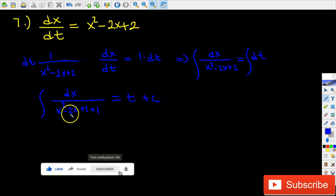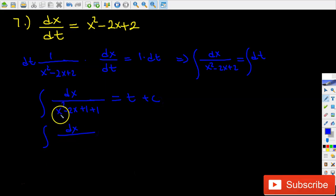We know that x squared minus 2x plus 1 is a perfect square: (x minus 1) squared plus 1 equals t plus c. Then the left hand side integral is going to be equal to arc tangent of (x minus 1) equals t plus c.